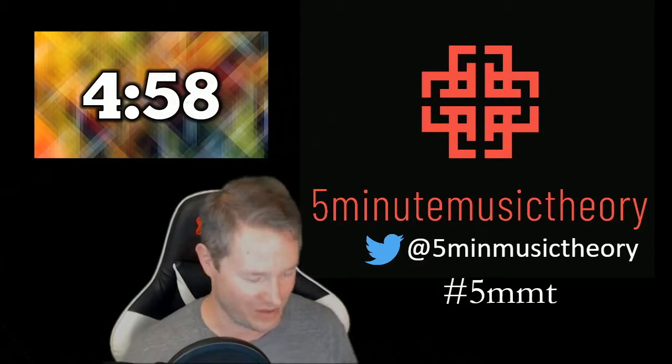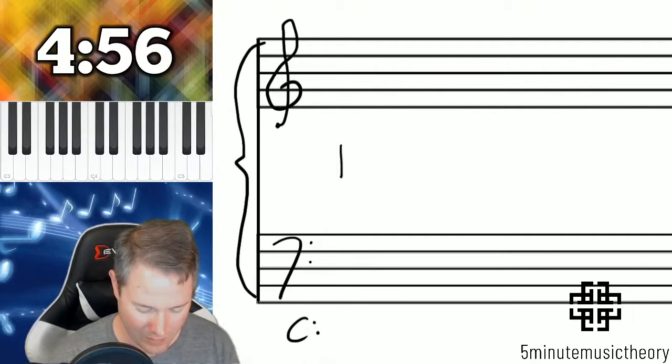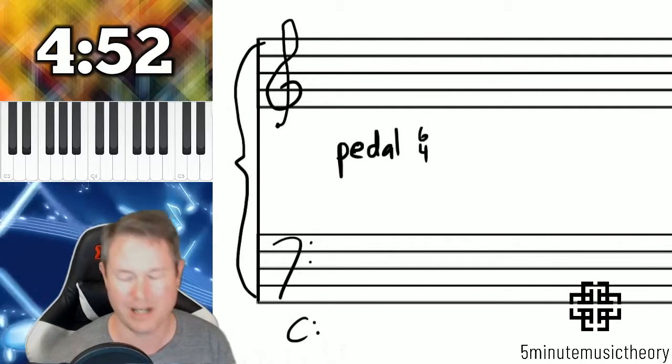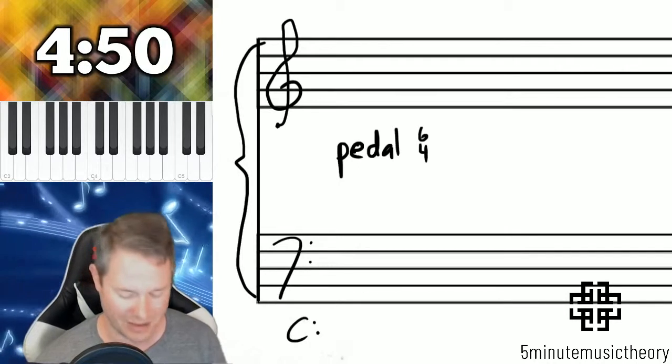We'll start the timer and we're going to talk in this video about the third type of 6-4, which is known as the pedal 6-4. We've already covered the cadential and the passing 6-4s. This is the pedal 6-4.